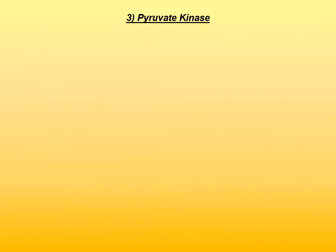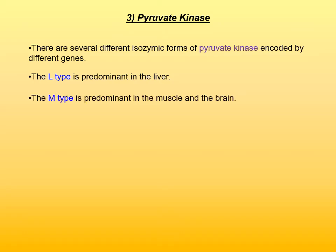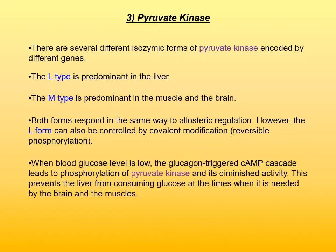Pyruvate kinase is also a regulatory point of glycolysis in the liver, as it is in the muscle. There are several different isozymic forms of pyruvate kinase encoded by different genes. The L-type is predominant in the liver, and the M-type is predominant in the muscle and the brain. Both forms respond in the same way to allosteric regulation. However, the L-form can also be controlled by covalent modification — reversible phosphorylation. When blood glucose level is low, the glucagon-triggered cyclic AMP cascade leads to phosphorylation of pyruvate kinase and diminishes its activity, preventing the liver from consuming glucose at times when it is needed by the brain and the muscles.